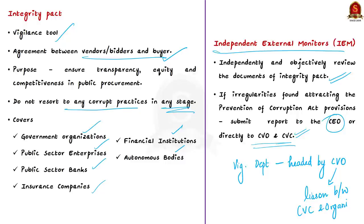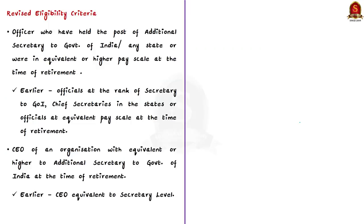The CVC has modified the criteria for nominating officers as IEMs. According to existing rules issued in June 2021, officials at the rank of Secretary to the Government of India, Chief Secretaries to states, or equivalent pay scale were eligible. Now, officers at the level of Additional Secretary are also made eligible — that is, an officer who has held the post of Additional Secretary to the Government of India or had an equivalent or higher pay scale at the time of retirement.